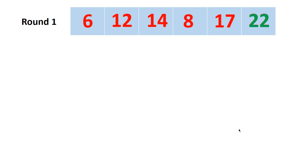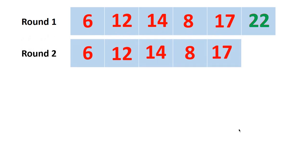Now 22 is in its place as the maximum at the end. In the next round, we consider just the first five elements. We check 6 and 12 — okay; then 12 and 14 — okay; then 14 and 8 — we switch; then 14 and 17 — they are in place. So 17 is now the second maximum, fixed in its position.